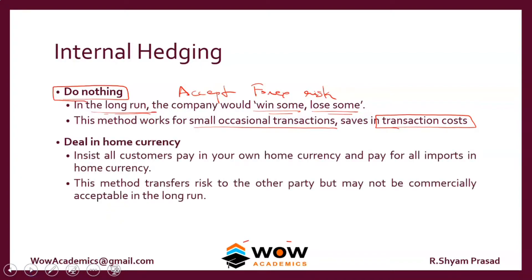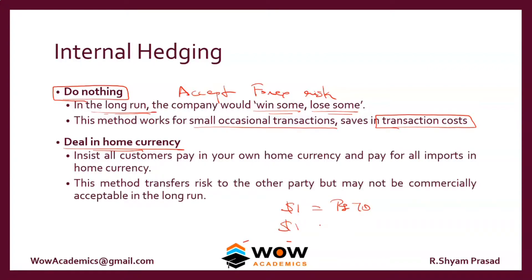The second method is to deal in your own currency. For example, you are selling a good for one dollar to a foreign company, and you expect to get 70 rupees. But after a month, when the foreign company pays you one dollar, the rupee is at 60. So the problem arises when you price in their currency terms.